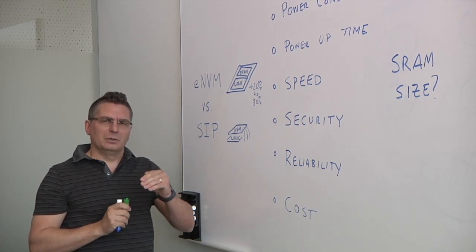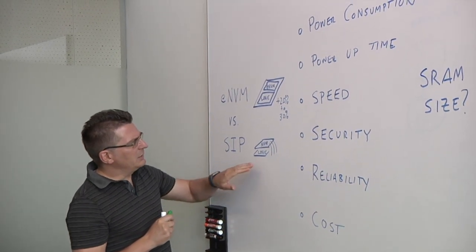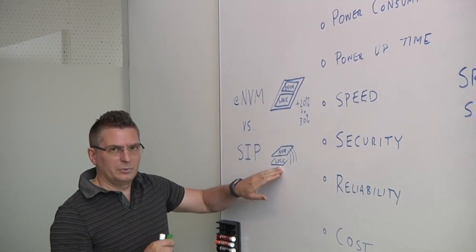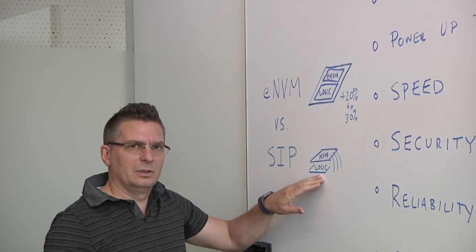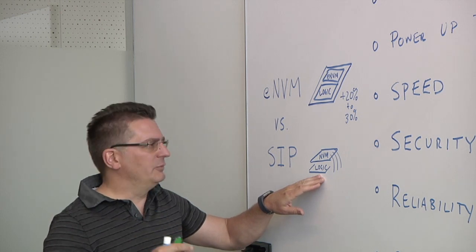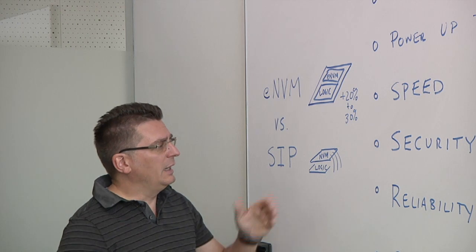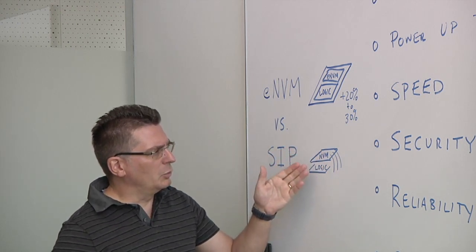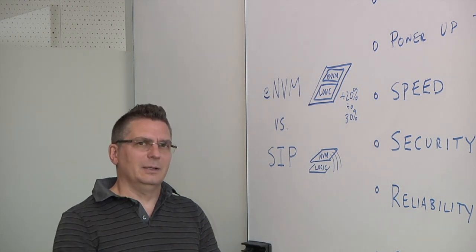And does it make sense for your application? Another option here is to go with system in a package. System in a package, you would have your logic chip built only on a logic process, no extra cost adder. However, you would pay for an external flash chip such as NOR flash, and then you would bond it together or put some sort of connectivity together between the logic device and the NVM.